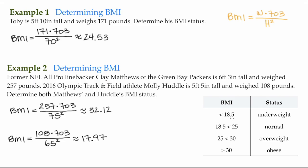Less than 18.5 is considered underweight. 18.5 to less than 25 is considered normal. Toby is 24.53, so he falls within this category. His status, his height compared to his weight, would be considered normal.